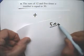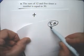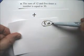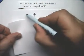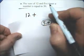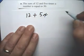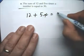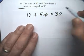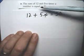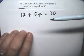That's 5 times a number. So the two things we're going to be adding are 12 and 5 times a number is equal to 30. See? So little by little. Here we have the sum of 12 and 5 times a number is equal to 30.